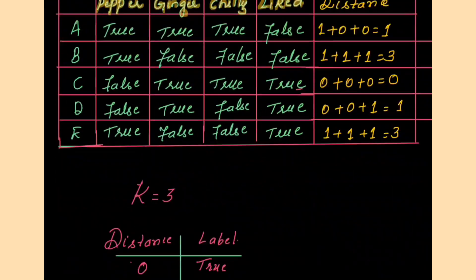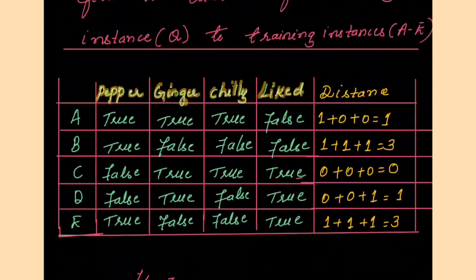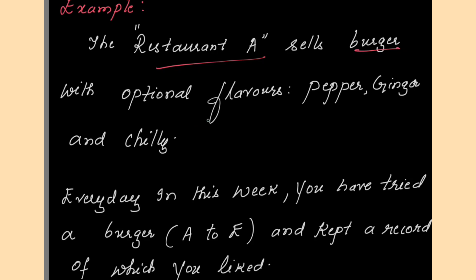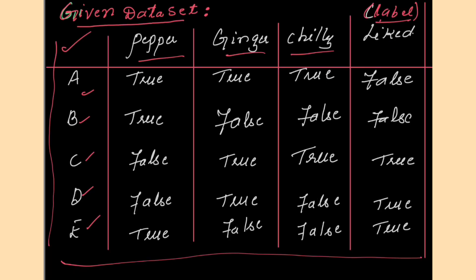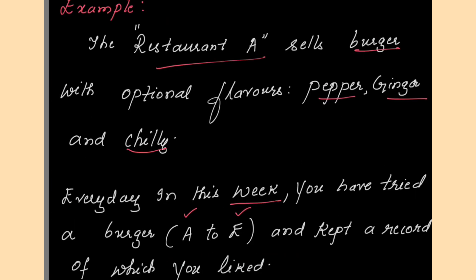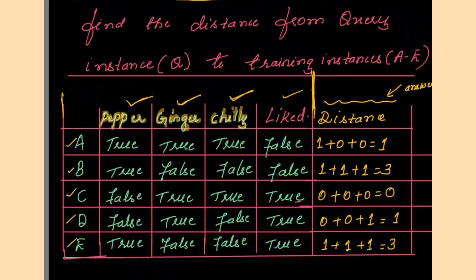So this is the given data set. The problem statement is like this: restaurant A sells burgers with flavors pepper, ginger, and chili — three flavors. Every day this week, from day A to day E, you tried a burger and kept a record of which you liked. The label attribute is 'liked', so you are keeping a record of which flavors of the burger you liked.